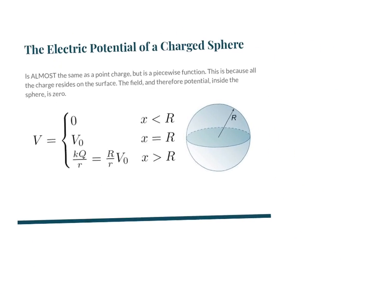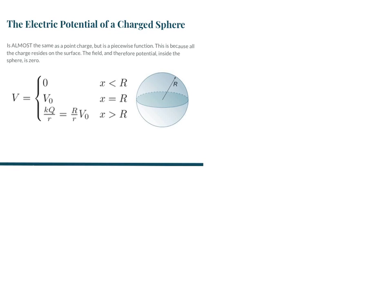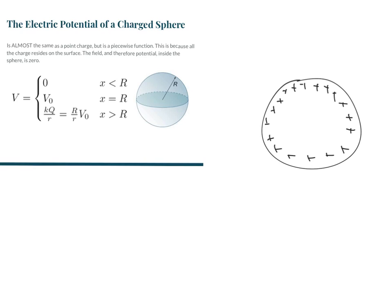If you remember back in statics when we were talking about conductors, you'd remember that on a sphere all of the charge — we'll call this one positive — all of the charge spreads out over the surface of the sphere. And due to Gauss's law, the field inside the sphere equals zero. And since there is no field inside the conductor, that's going to mean that the potential everywhere inside the conductor is zero.